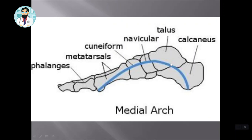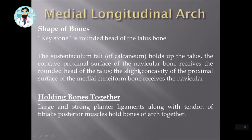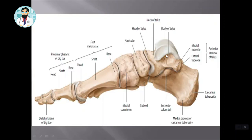Now when we look at the Medial Longitudinal Arch, we see which bone is the key bone working on it. I will show you the diagram. First of all, you see the shape of the bone. This bone is the Talus — the Talus is the keystone bone working on it. The Talus sits on the Calcaneum, which is the heel bone. The Calcaneum has a structure called the Sustentaculum Tali, and the Sustentaculum Tali supports the Talus.